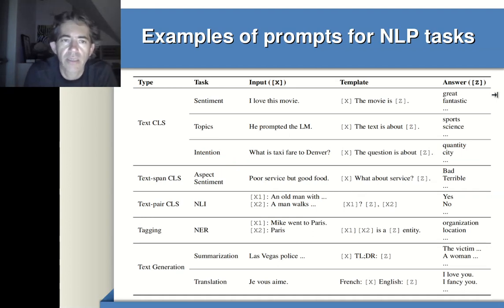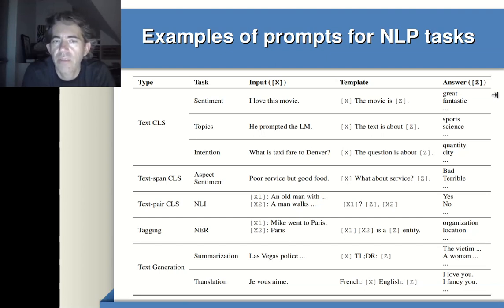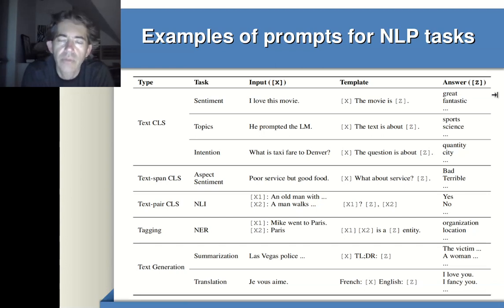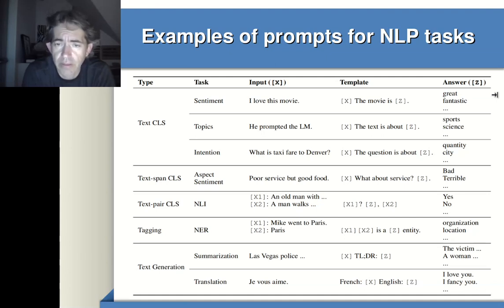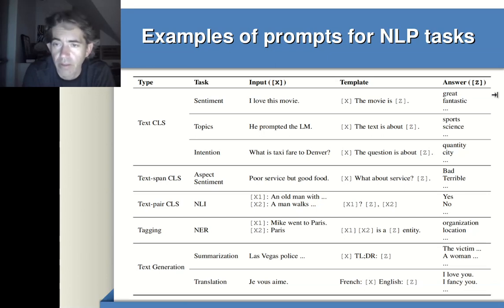Here are some examples of prompts for NLP tasks, showing how versatile this solution can be. For text classification with sentiment: input 'I love this movie,' template 'placeholder of this movie is Z' — the language model will likely answer 'great,' 'fantastic,' 'wonderful.' For topics, a simple prompt places the input and says 'the text is about' — the language model should respond with science, language modeling, prompting, GPT, etc. For intention, you rephrase the input asking 'the question is about,' hoping the context is sufficient.